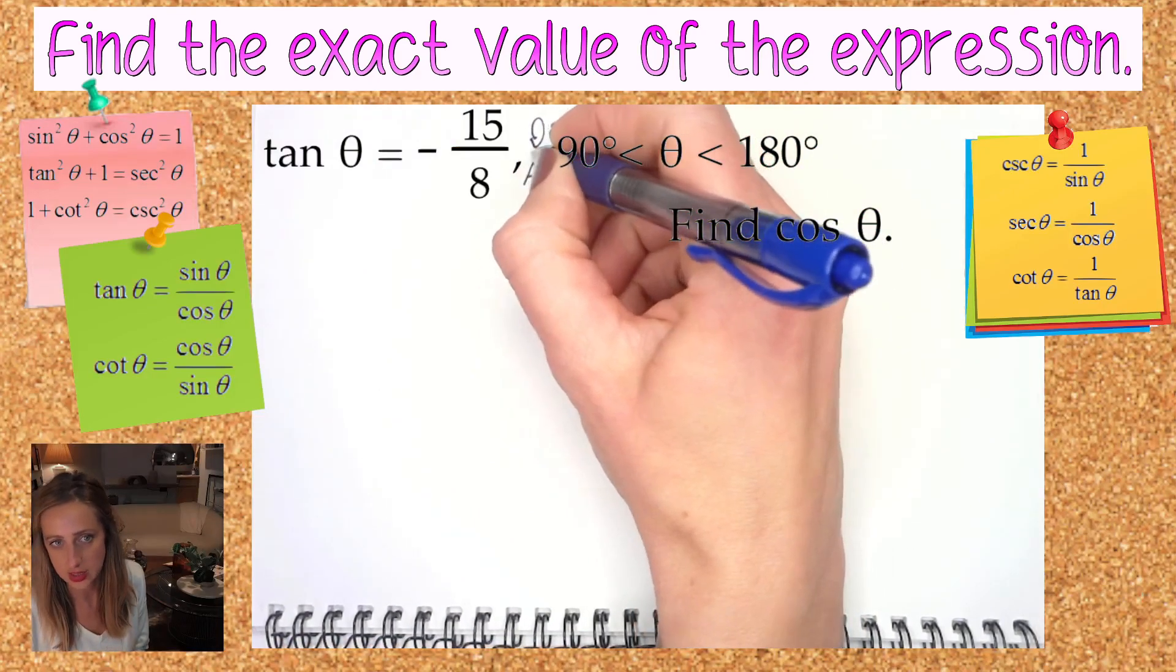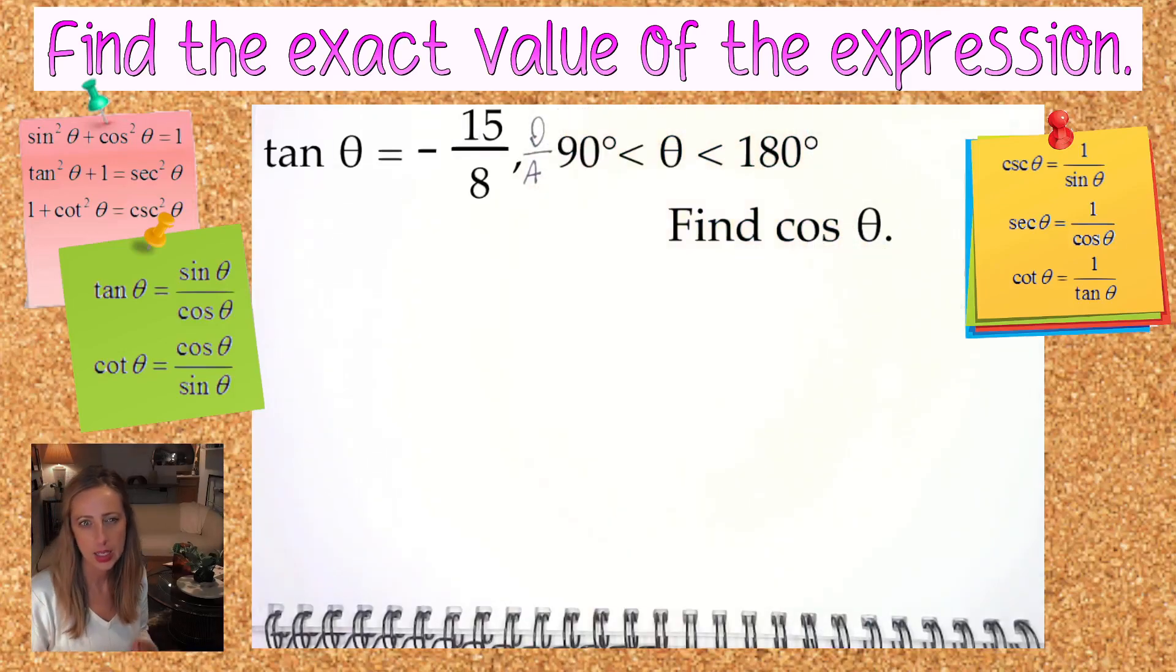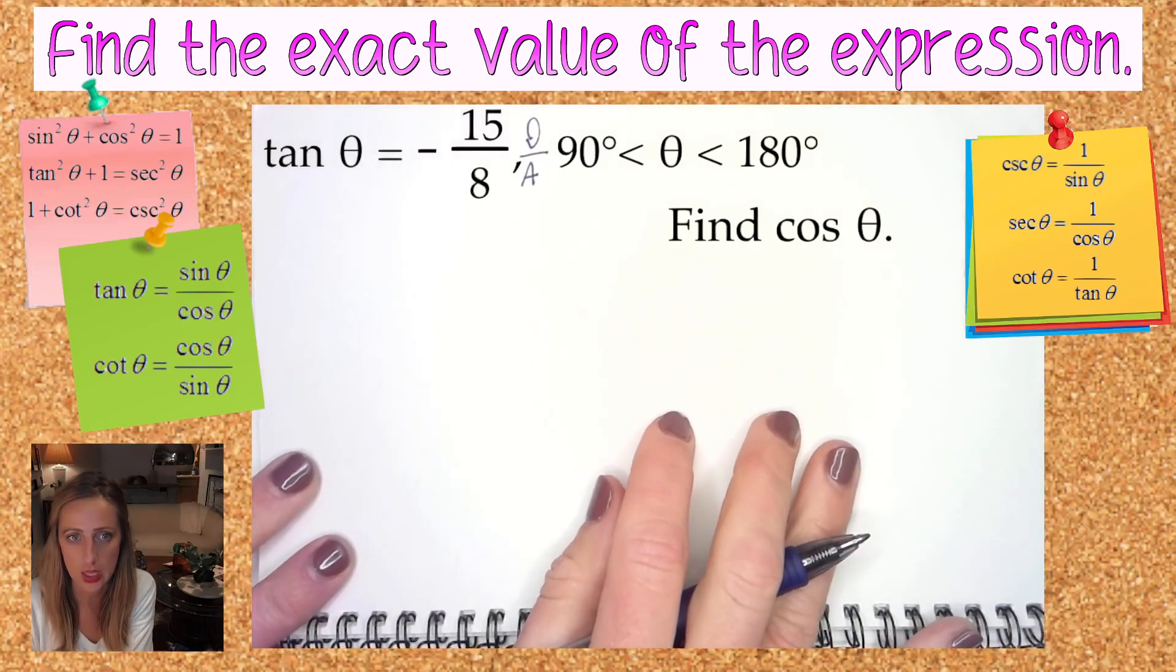I can label two out of the three sides in my right triangle, and then I can find the third side. Because with right triangles, we can find all three sides, the third side if we're given two, using Pythagorean theorem, or if you're even more clever, Pythagorean triples.